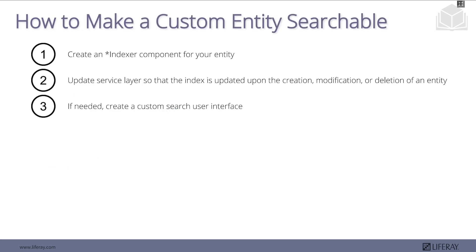So how do we make a custom entity searchable? Say we have an assignment and we want to be able to search for that assignment. What we need to do is create the indexer for our entity, update the service layer so that the index is updated whenever our assignment is updated, and then we can do a bit more if we want a custom UI to fully leverage our entity search.